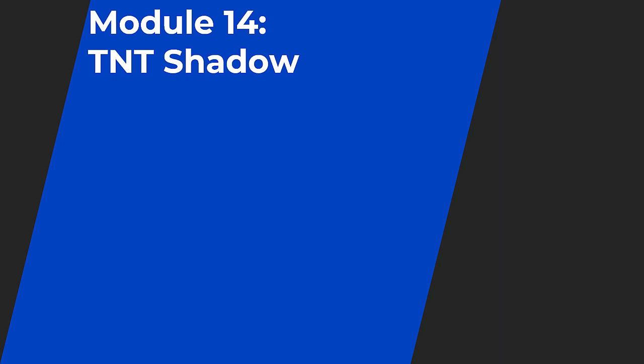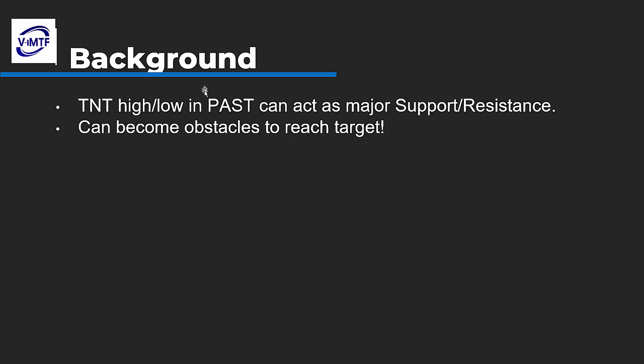However, if you see a TNT in the past, the support resistances of TNTs in the past — which are called shadows — they can sit there and stop you from becoming profitable or even declare a loss for you. So you have to pay attention to these TNT shadows. TNT highs and lows in the past can act as major support resistances, become obstacles to reach your target, and could even interfere in your two-bar validation.